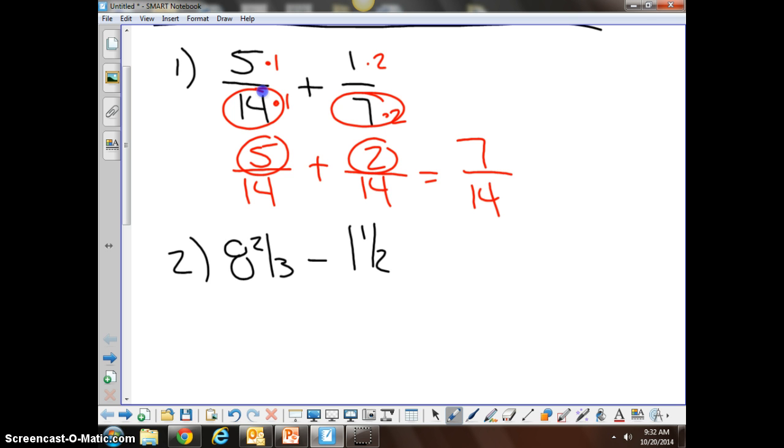7/14ths reduces down to 1/2, because 7 divided by 7 is 1, and 14 divided by 7 is 2. 1/2 is our boxed final answer.